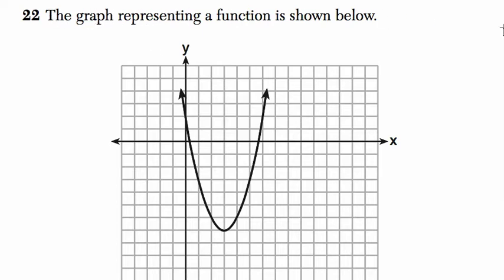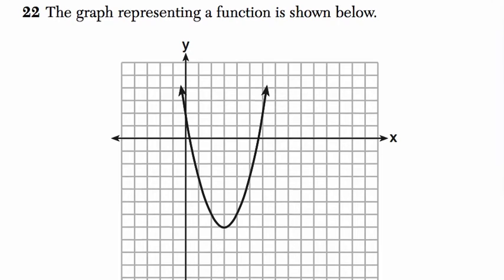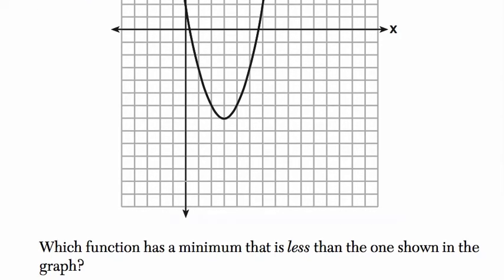The graph representing a function is shown below, so you can see this parabola right here. And they say which function has a minimum that is less than the one shown in the graph. So first let's just say what is the minimum. That's this point here, the lowest point in the graph.